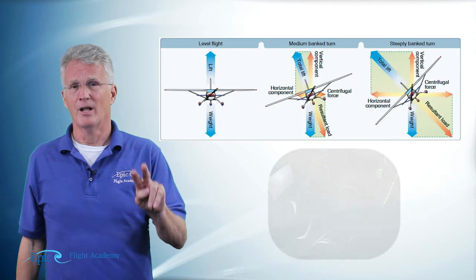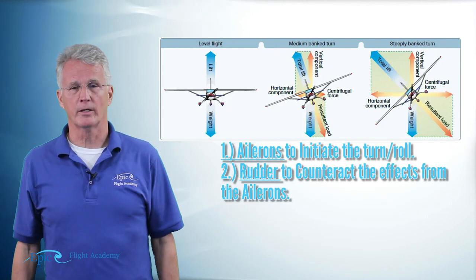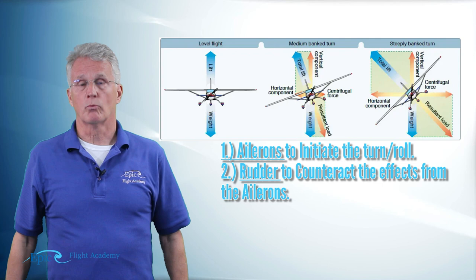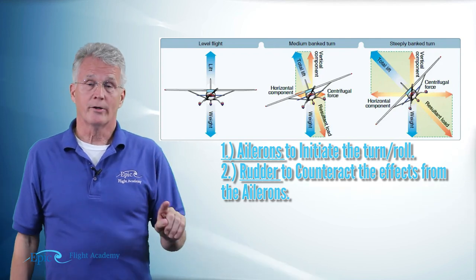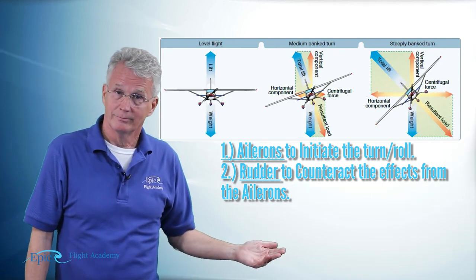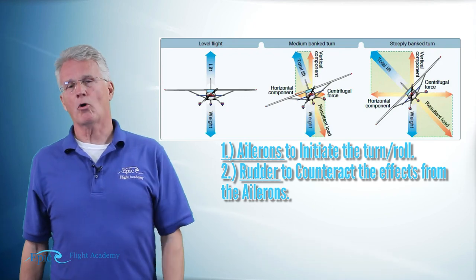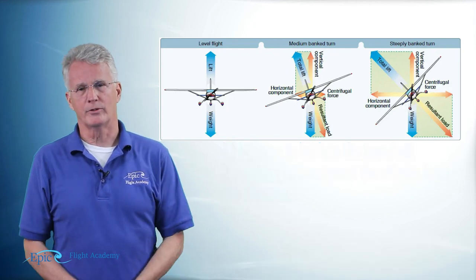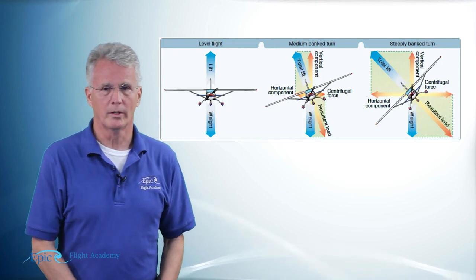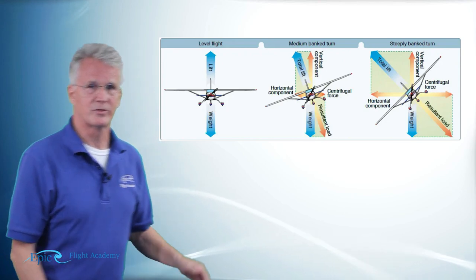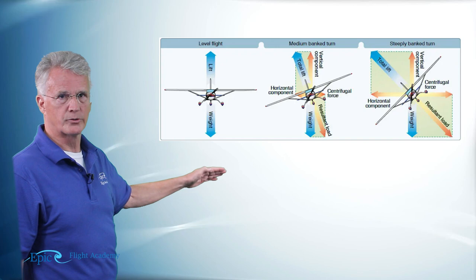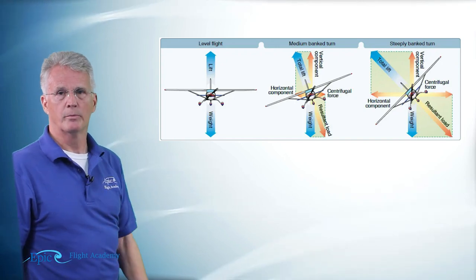So far I've used two of my primary flight controls: ailerons to initiate the roll, and rudder because I used the ailerons. Now if that's all that I do, this airplane rolled onto its left side will start a gradual descent.